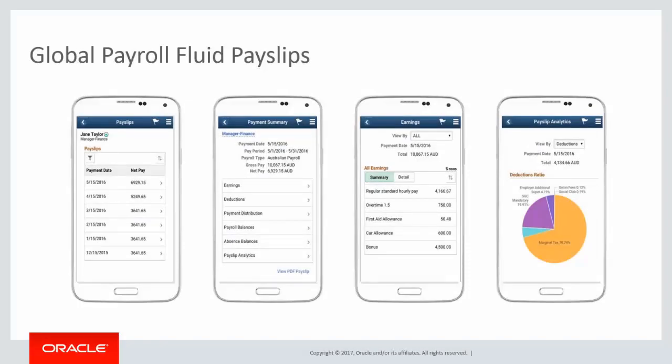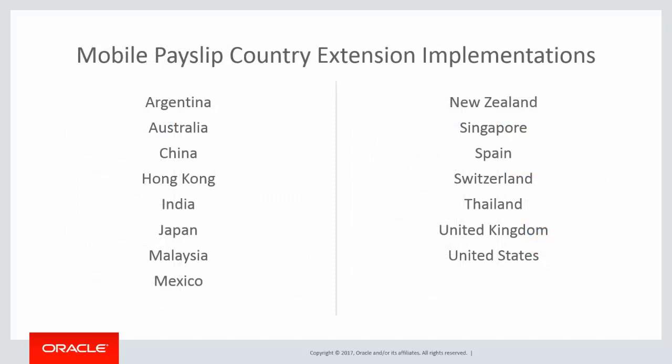The Mobile Payslip feature uses the PeopleSoft Fluid user interface to render Payslip information for small form factor devices, enabling employees to view Payslip information on their smartphones. As of HCM Image 24, this functionality has been implemented for the Global Payroll country extension shown. This completes our discussion of the Mobile Payslip country extension implementation feature.